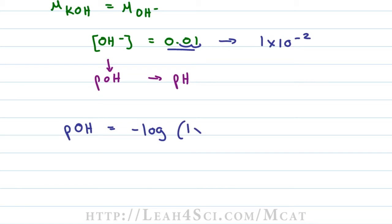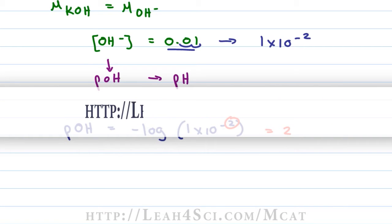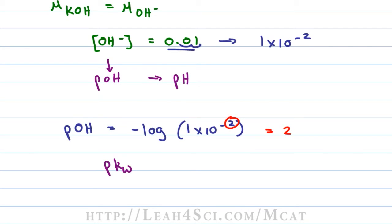1×10^-2 which means our pOH is equal to 2. If you're not familiar with this trick, go back to my MCAT Math video series which you can find on my website leah4sci.com/mcat-math. If pKw of 14 is equal to pH + pOH, to find the pH we simply do 14 - 2 which is equal to 12 and that's our pH.